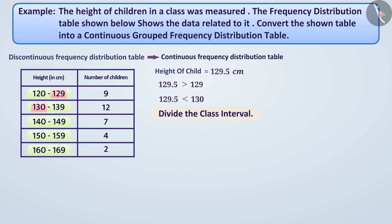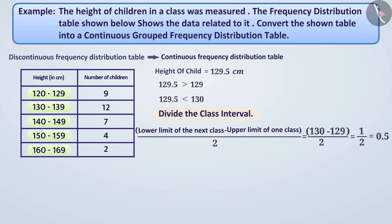For this, we will subtract the upper limit of one class from the lower limit of the next class in consecutive order and divide the result by 2. Like, we will subtract the upper class limit, 129, which falls on 120 to 129 from the lower class limit, 130 of the next class, 130 to 139 and divide the result by 2. This will give us the result as 0.5.